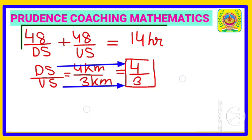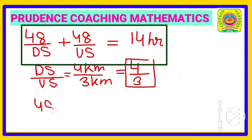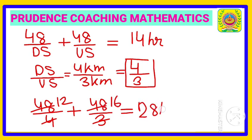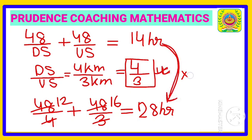Substituting downstream = 4 and upstream = 3 into the equation, we get 48/4 + 48/3, which equals 12 + 16 = 28 hours. But the required total is 14 hours, so we are getting 28 hours with these ratio values — which is twice the given value.